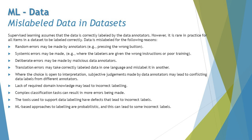Annotators can be 99.99 percent accurate, but that 0.01 percent cannot be fully eliminated. Systematic errors may occur where labelers are given wrong instructions or poor training, and without clear context they may interpret things differently. Deliberate errors may be made by malicious data annotators. Translation errors may also take correctly labeled data in one language and mislabel it in another — this is increasingly common as AI systems become multilingual and base data is converted across languages.